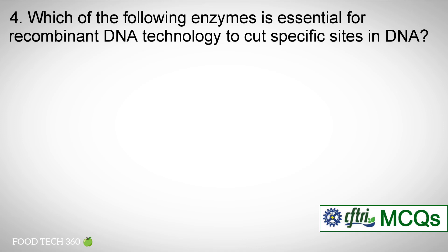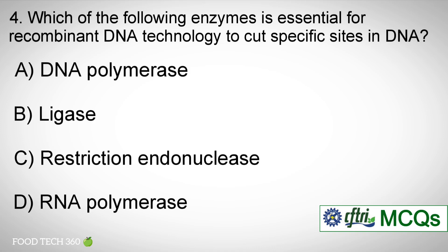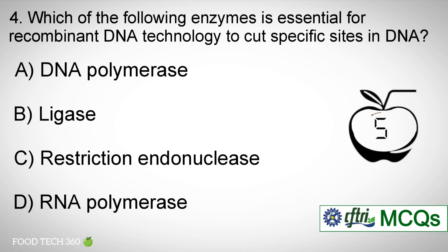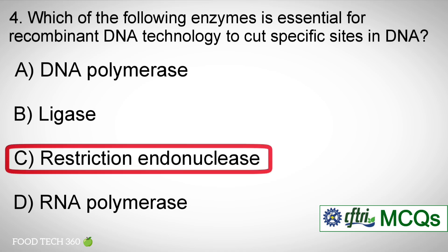Question number four: Which of the following enzymes is essential for recombinant DNA technology to cut specific sites in DNA? Options: A) DNA polymerase, B) Ligase, C) Restriction endonuclease, D) DNA polymerase. Correct answer: C) Restriction endonuclease.